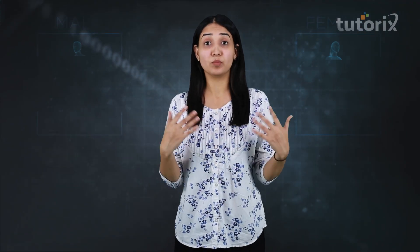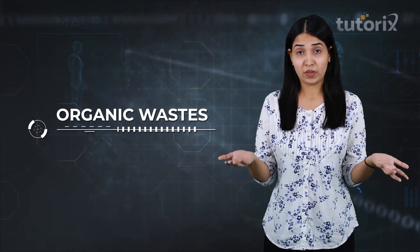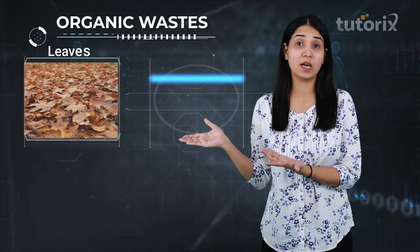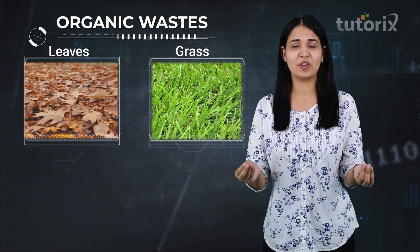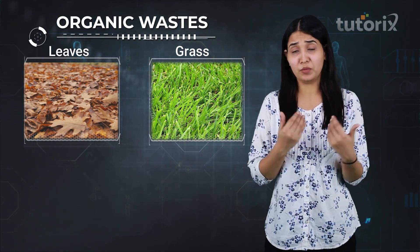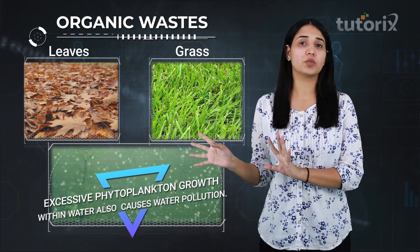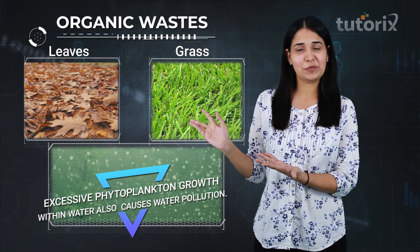Now let's move ahead and discuss the next water pollutant — organic waste. The organic waste includes tree leaves, grass, trash, and the most common ones which occur because of natural phenomena, simply by runoff. Even the excess phytoplankton growth can cause water pollution. One good thing is that these wastes are biodegradable in nature. When this organic waste is present in water, certain types of bacteria can decompose it, as it is degradable.